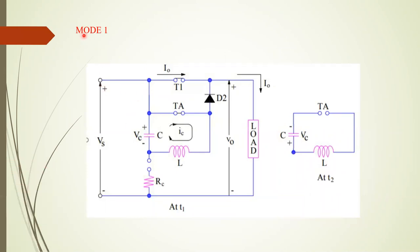In Mode 1, at the interval T0 to T1, only the main thyristor T1 is on. The auxiliary thyristor is off, and the main current I0 is the load current which is flowing through the circuit. Vs is the supply voltage applied to the circuit and the I0 current is flowing through the load.